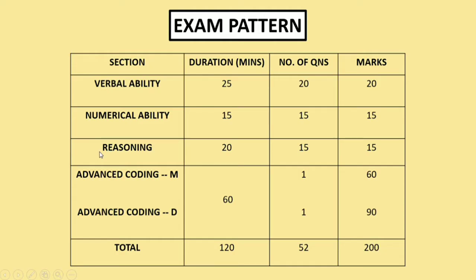For reasoning, the topics are coding and decoding, series and patterns, problem solving, figural and factual analysis, decision making, and syllogism. These are all the topics for reasoning. I've now given you a brief overview of all topics and I'll explain each one in detail next.